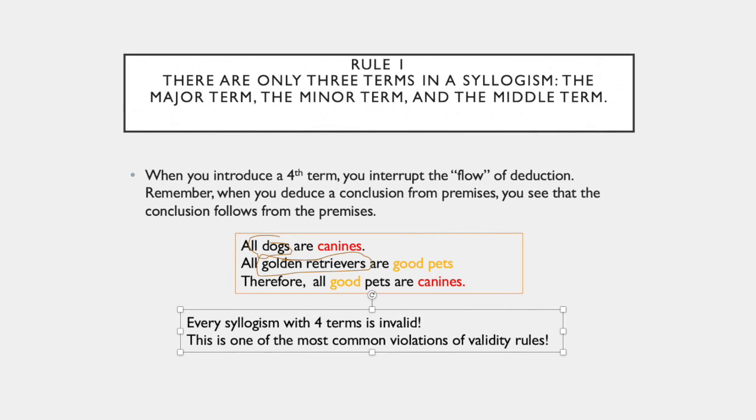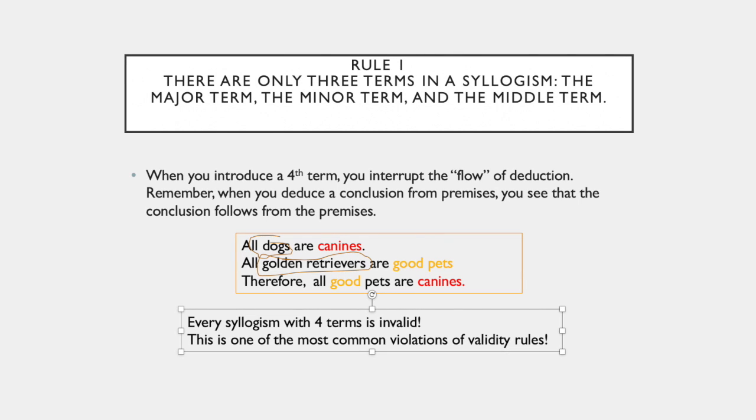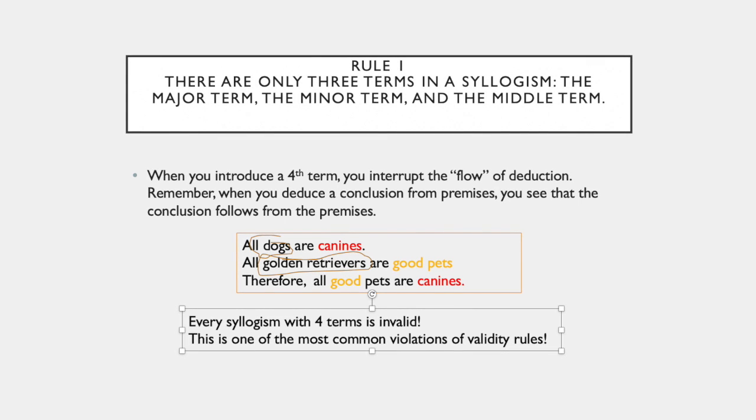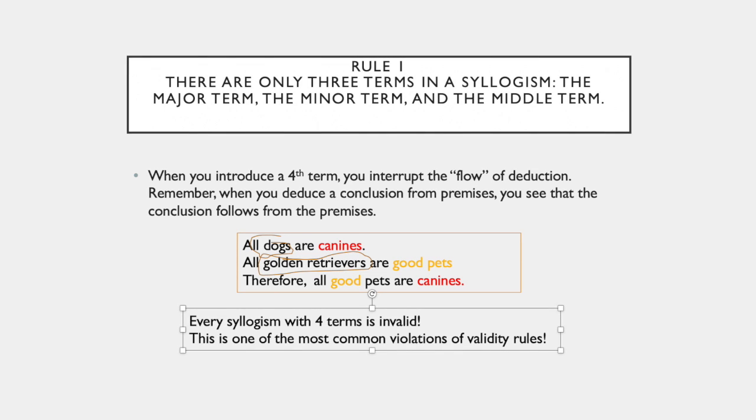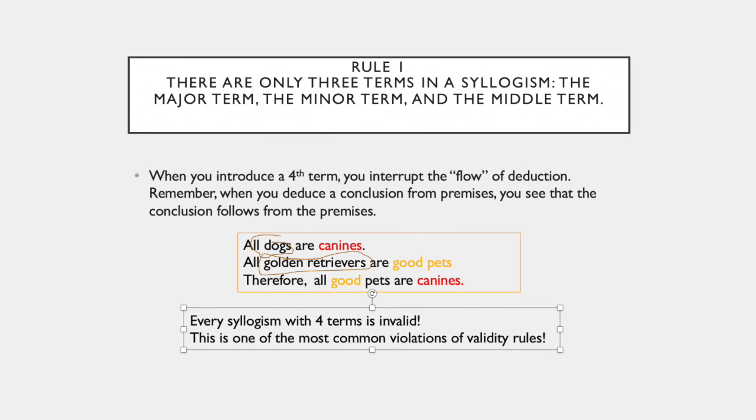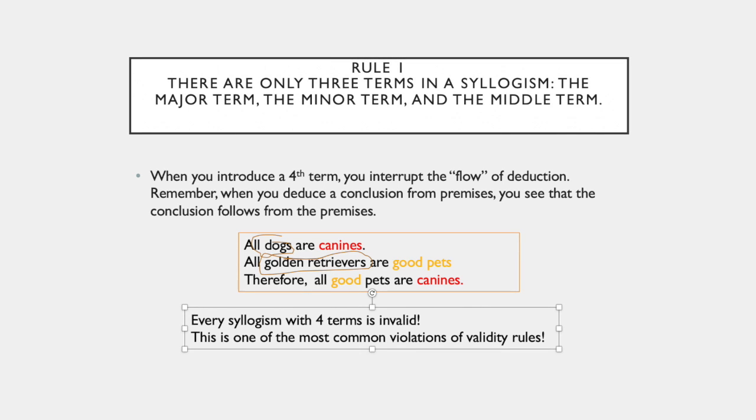So here's an example of a syllogism with four terms. All dogs are canines. All golden retrievers are good pets and therefore all good pets are canines. Hopefully you can see that the conclusion does not follow from the premises.